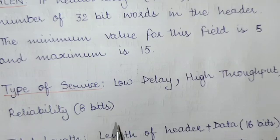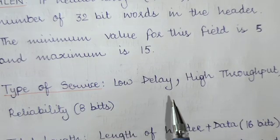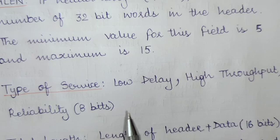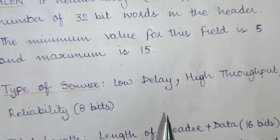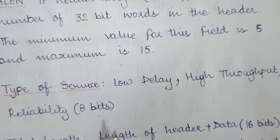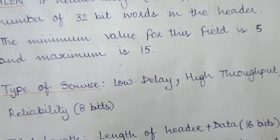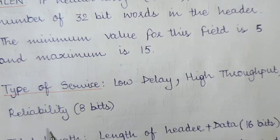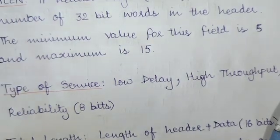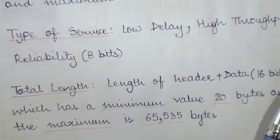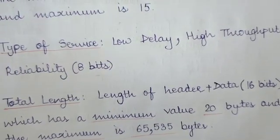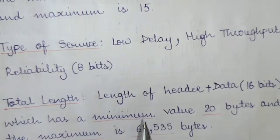The type of service field tells what kind of service is being provided — whether it is a low delay service, a high throughput service, or a reliability service. Depending on priority, whether you want low delay, high throughput, or high reliability, the type of service field indicates what kind of service is being provided. Eight bits are reserved for this field.